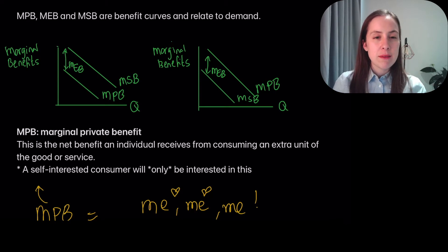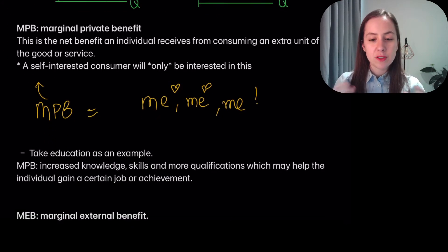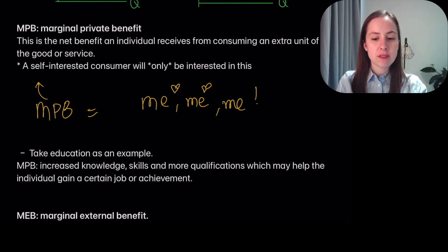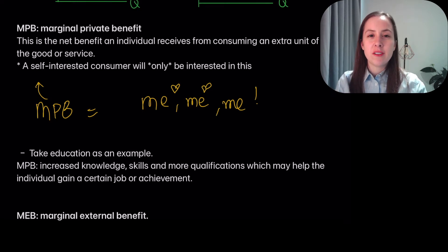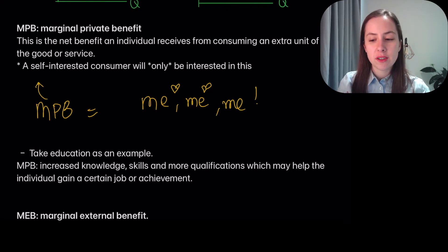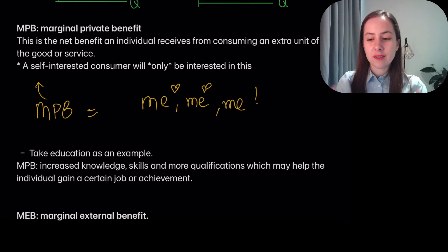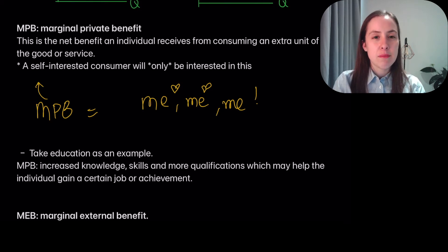First one: MPB — Marginal Private Benefit. What does this mean? It's the net benefit an individual receives from consuming an extra unit of the good or service. Whenever it says the word 'marginal,' be sure to say 'extra unit of the good or service.' The marginal private benefit is all about yourself — the benefits you receive from consuming an extra unit. A selfish consumer only cares about their MPB.